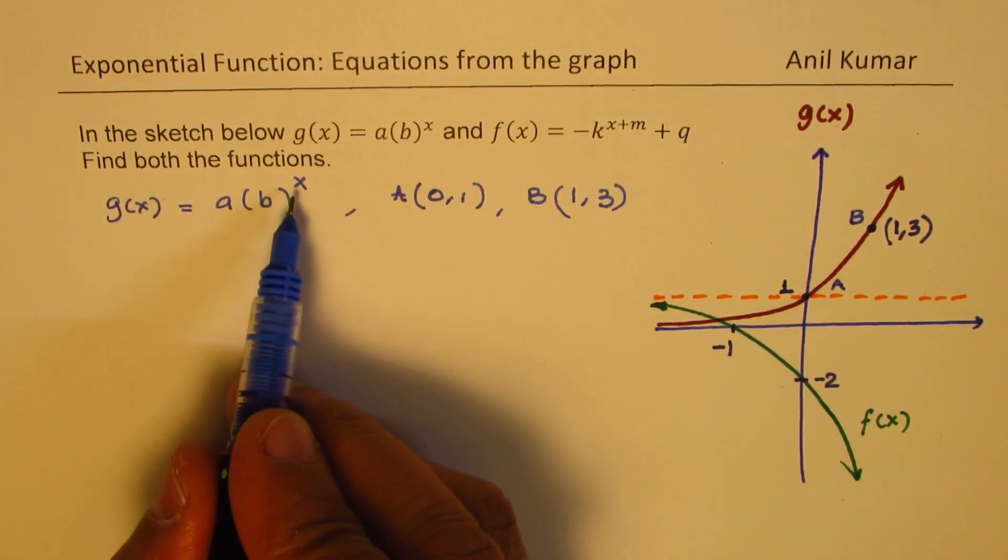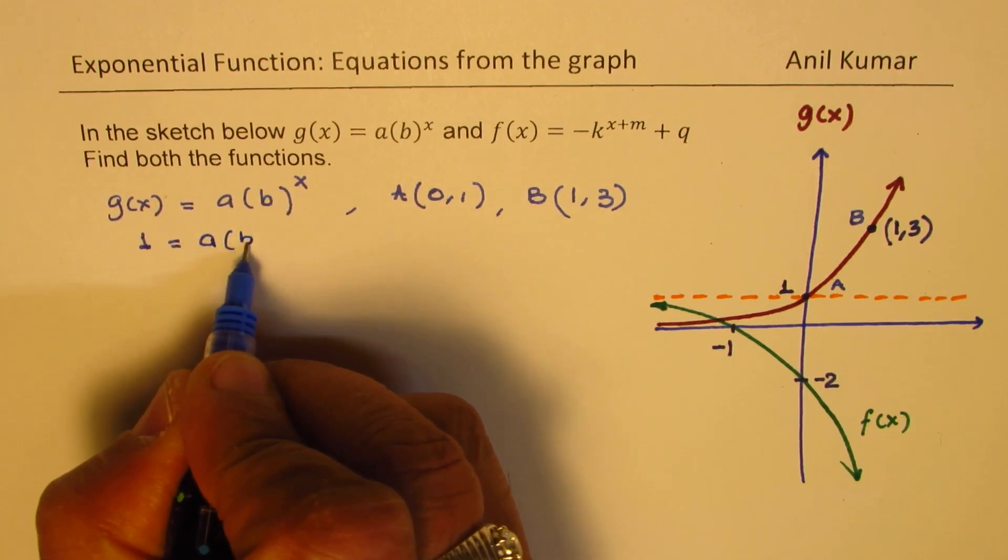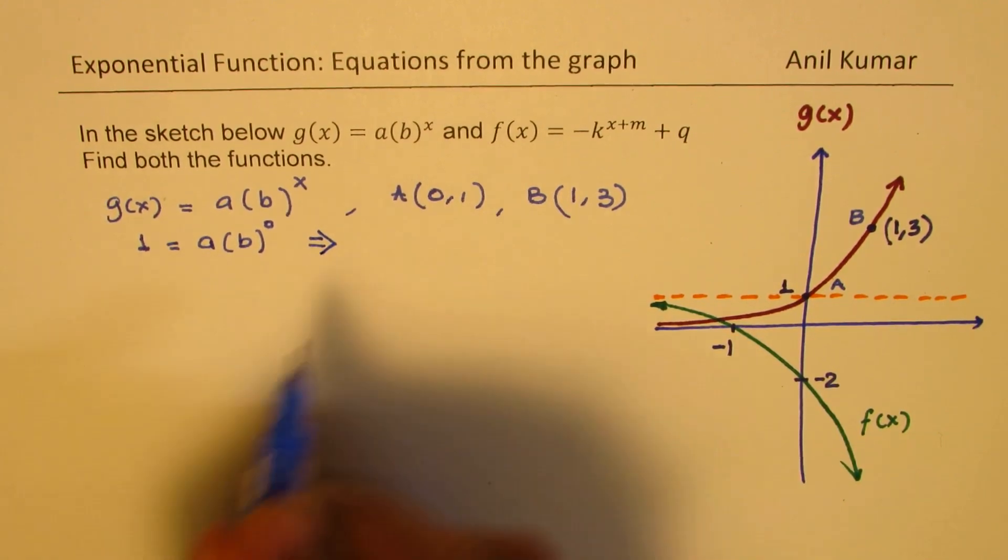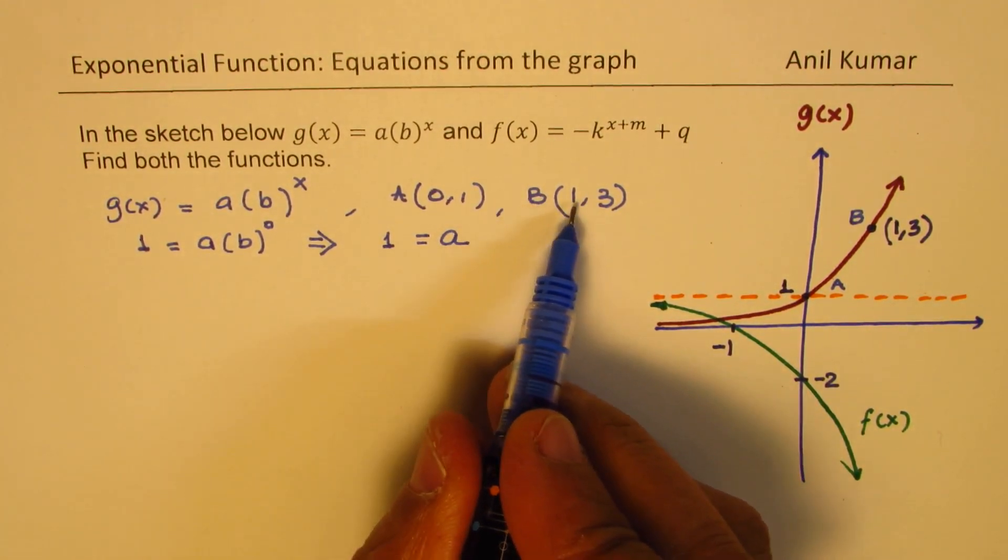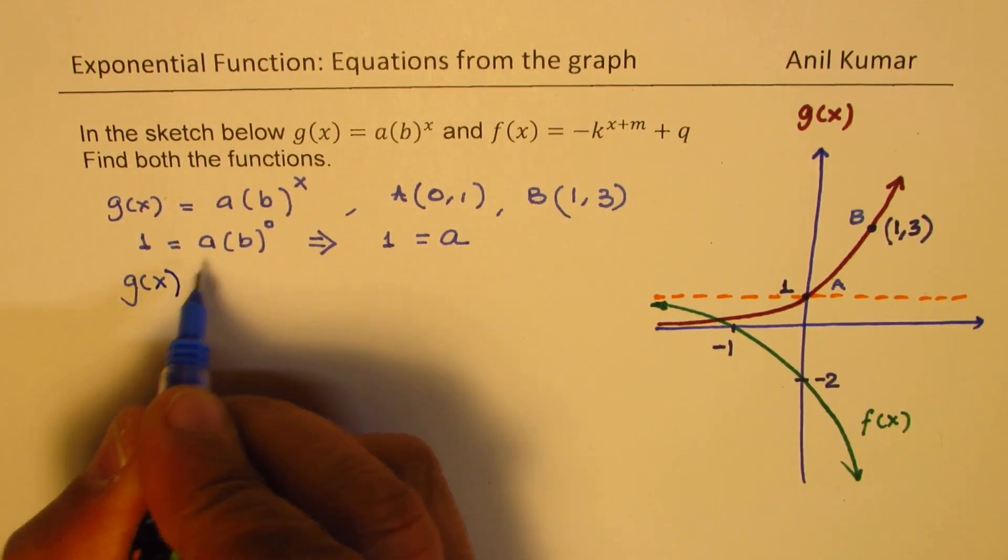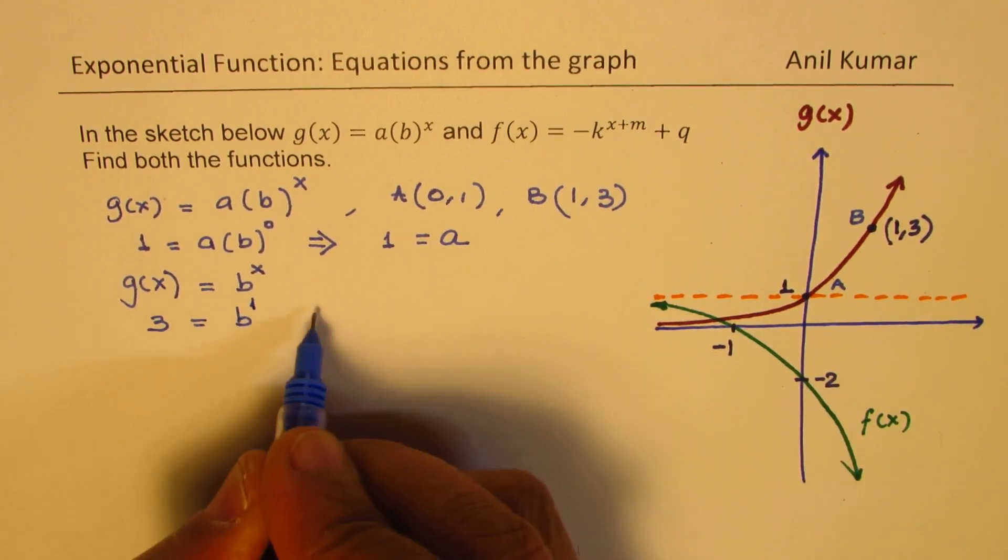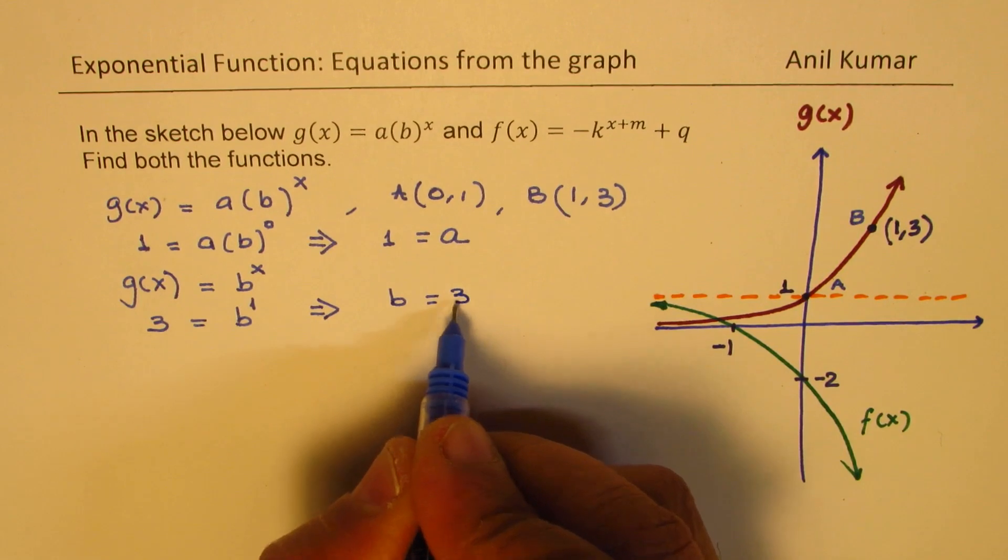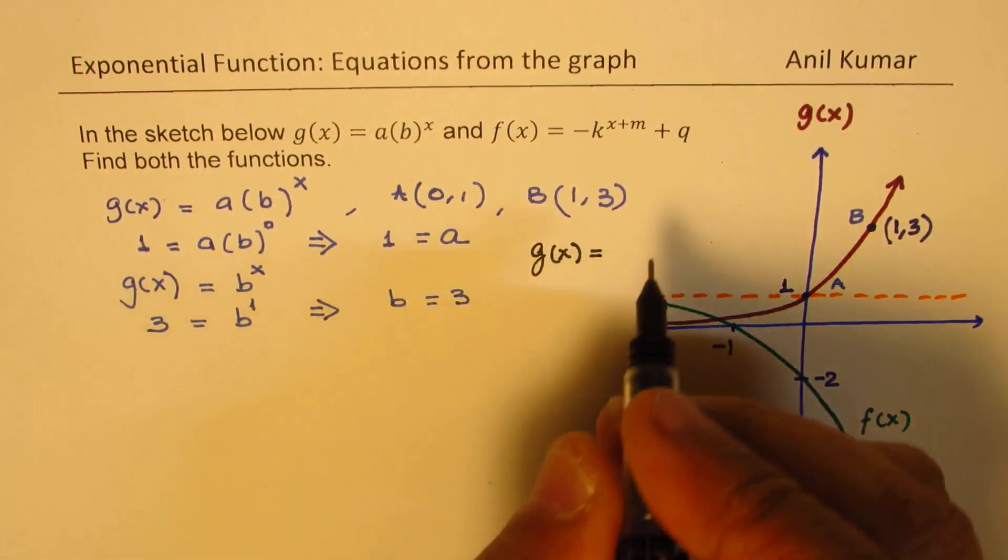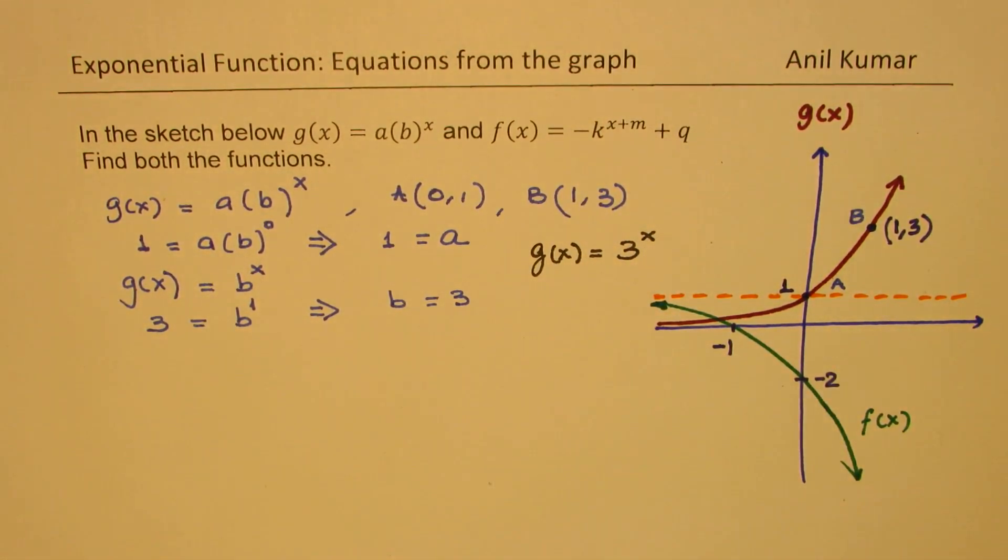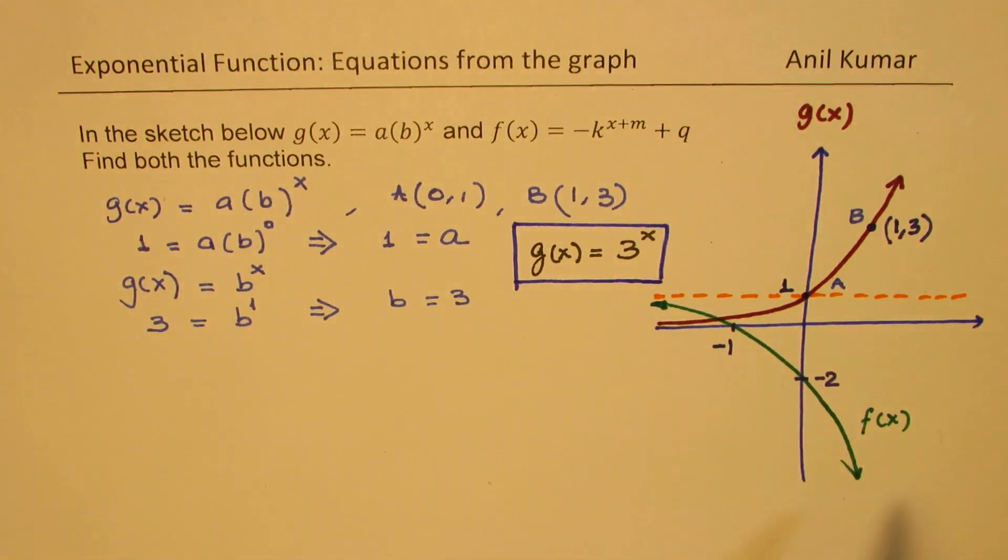So if we write 0 and 1, 0 for x and 1 for the output, I get 1 = a·b^0 and that gives you the value of a. b^0 is 1, so we get 1 = a. Now we are going to substitute the point b which is (1, 3). So we already know the value of a, so I could write this as b^x. Substituting 1 and 3, we get 3 = b^1 and that implies that b is equal to 3. So we have the first function here which is g(x) = 3^x. So let me highlight this and now we'll figure out how to find the equation for the second function which is f(x).